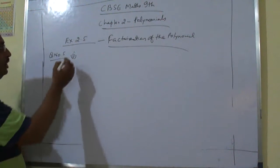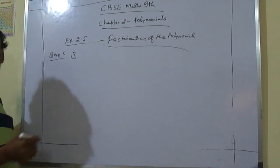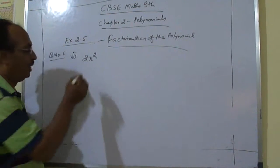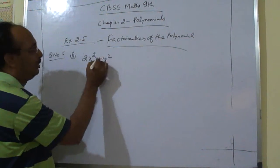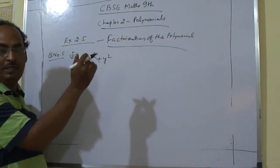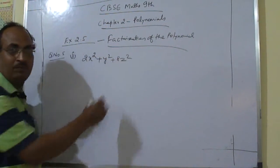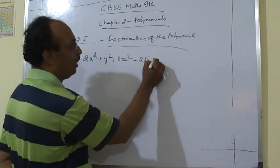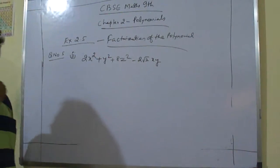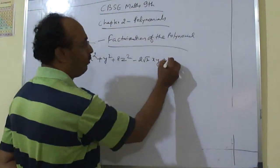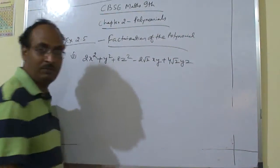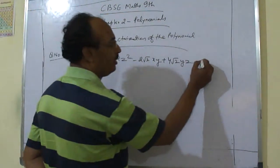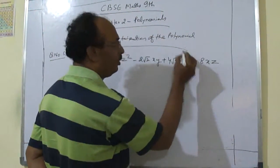The question is: 2x squared plus y squared plus 8z squared minus 2√2·xy plus 4√2·yz minus 8xz.